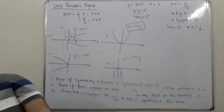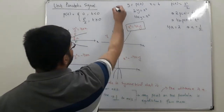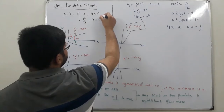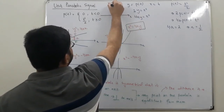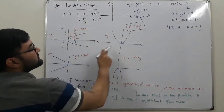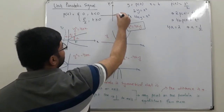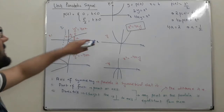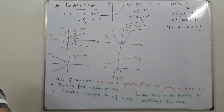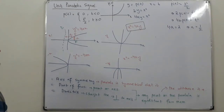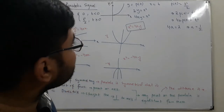Now I'll draw it. This is the time axis T and this is P(T). Since the signal does not exist for T less than 0, I cut off the left portion and keep only the right side. This is the graph for our signal P(T).